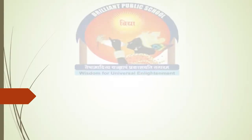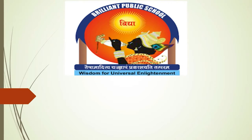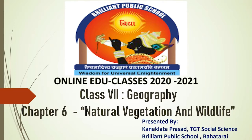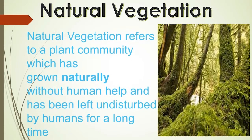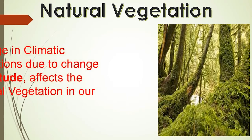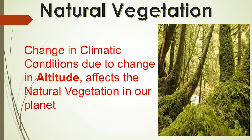Hello students. In this video we will learn about forests, grasslands and shrubs from Chapter 6 of Geography, that is Natural Vegetation and Wildlife. Natural vegetation refers to a plant community which has grown naturally without human help. It gets whatever it needs from its natural environment.